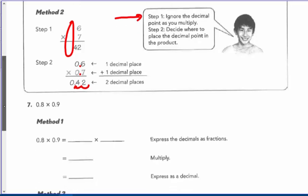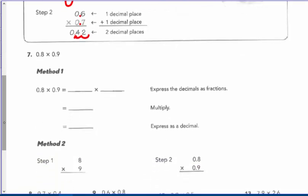Go ahead and do numbers 7, 8, 9, 12, and 13 on your own. You can use method one or method two. I like method two — multiply as if they are whole numbers, then put the decimal in. Go ahead and do page 22, and we'll go over it in class.